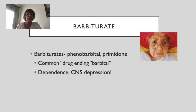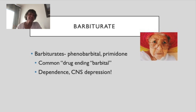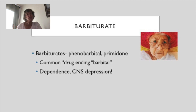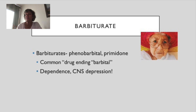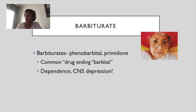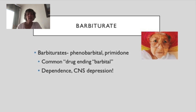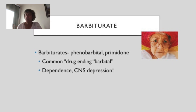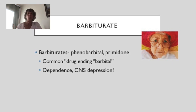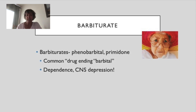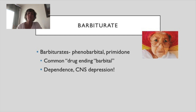The first class of GABA-increasing medicines is barbiturates. The main one — an older drug that's been around a long time — is phenobarbital. Primidone is another. Many barbiturates end in '-barbital,' which is a common generic drug ending to look out for. Side effects include dependence and significant CNS depression — watch for sedation and respiratory depression. If we quiet the central nervous system too much, patients can stop breathing.